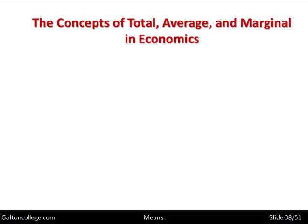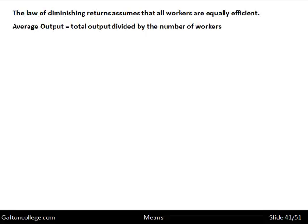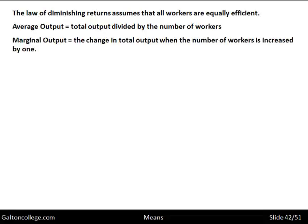We need to be careful about the concepts of total, average and marginal in economics. We may illustrate the law of diminishing returns by changes in the marginal output or marginal cost. Average output is the total output divided by the number of workers. Marginal output is the change in total output when the number of workers is increased by one. The law of diminishing returns assumes that all workers are equally efficient.